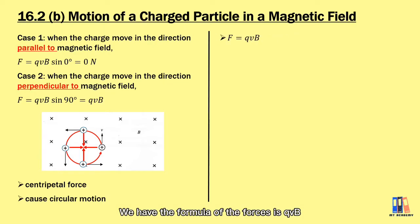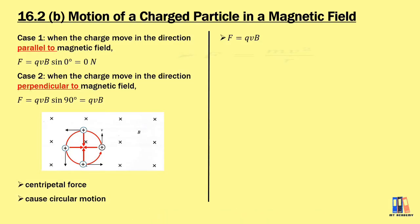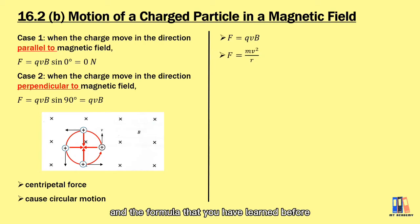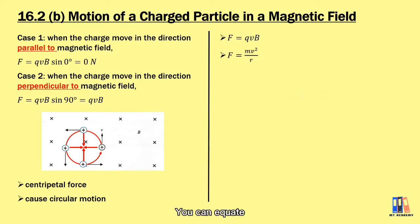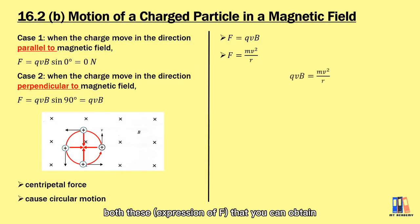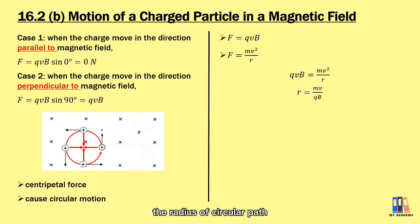Since the force equals QVB and it is also the centripetal force, we use the centripetal force formula F = mv²/r. Equating both equations, we obtain the radius of the circular path as r = mv / (QB).